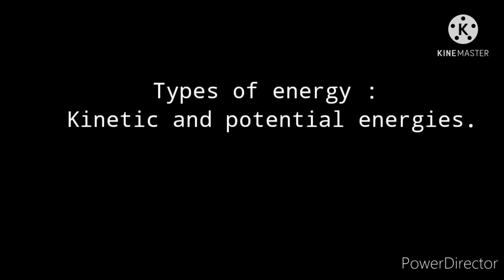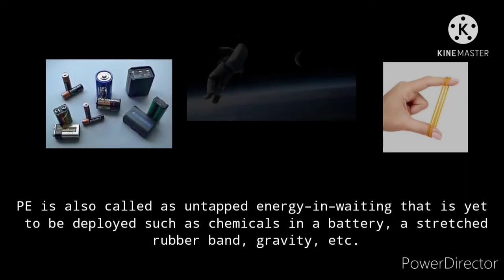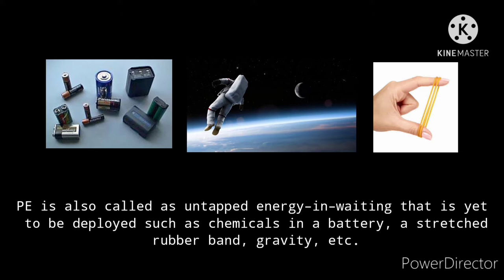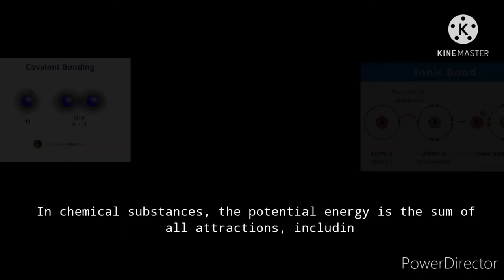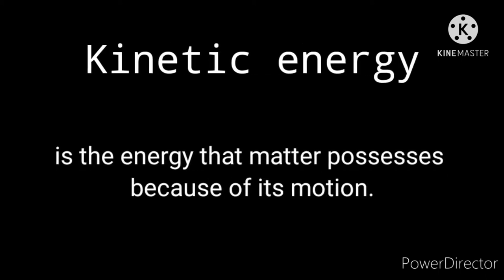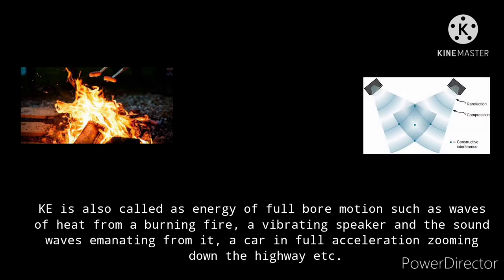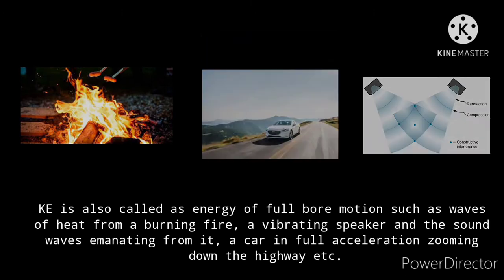All forms of energy can be converted to heat energy. Energy can also be categorized as kinetic energy and potential energy. Potential energy is stored energy which may be released under appropriate conditions, as in a nuclear reaction. It is also called untapped energy, such as chemicals in a battery, a stretched rubber band, gravity, etc. In chemical substances, the potential energy is the sum of all attractions, including all covalent bonds, ionic bonds, or electrostatic attractions. Kinetic energy is the energy that matter possesses because of its motion — such as waves of heat from a burning fire, a vibrating speaker, sound waves, or a car accelerating down the highway.